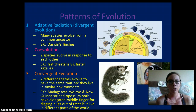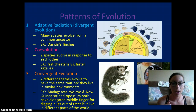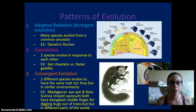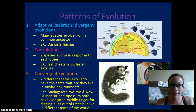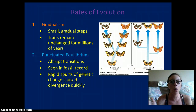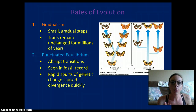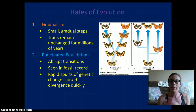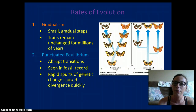Convergent evolution is when two species evolve similar traits because they live in similar environments. For example, the Madagascar aye-aye and the New Guinea striped opossum both have an elongated middle finger for digging out bugs from trees, but they live in different parts of the world with similar habitats. The emu and ostrich are another example. Regarding rates of evolution, gradualism is a slow, small, gradual change where traits remain unchanged for millions of years before evolving. Punctuated equilibrium is an abrupt transition with rapid spurts of genetic change causing divergence quite quickly, and this can be seen in the fossil record.